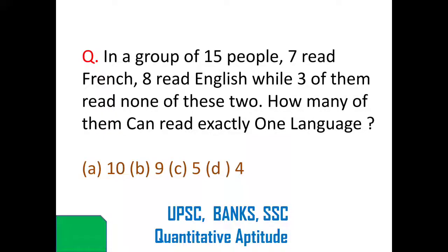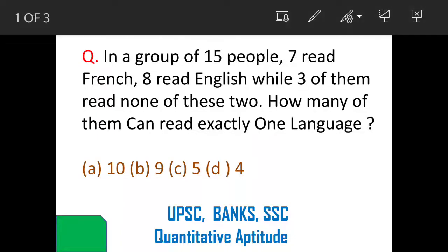We will see a question on sets. In a group of 15 people, 7 can read French and 8 can read English, while 3 of them cannot read any of these 2 languages. The question is: how many people can exactly read one language?